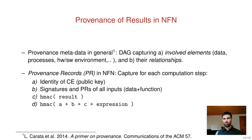In this work we propose to integrate provenance records in named function networking. A provenance record captures for a single computation step: (a) the identity of the compute entity, which is a public key; (b) signature and provenance records of all inputs, which is function and data; (c) an HMAC over the result; and (d) an HMAC over the concatenation of a, b, c and the expression. Note that (c) constitutes a statement on the computation process which cannot be plausibly denied by the computing entity in future.